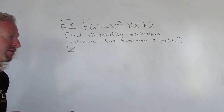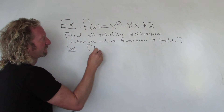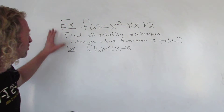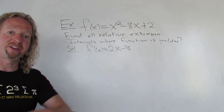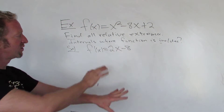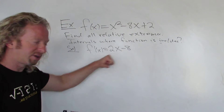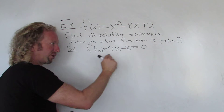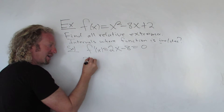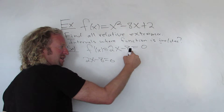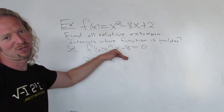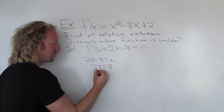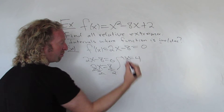Let's go ahead and do the problem. We start by taking the derivative: the derivative of x squared is 2x, the derivative of negative 8x is minus 8. So f prime of x equals 2x minus 8. The first step is always to take the derivative and ask yourself: is it undefined anywhere? This one is not undefined anywhere, so life is good. Then we set it equal to zero.